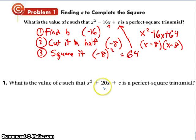So when we look at this one, we're going to take the B value, cut it in half, square it, and that becomes C. The whole object is to get a perfect square trinomial when we're done.